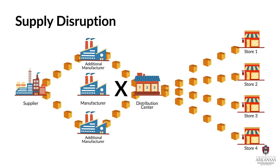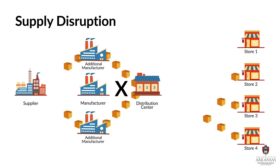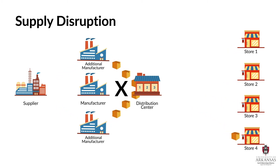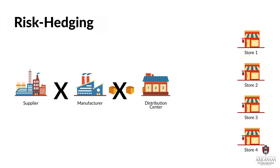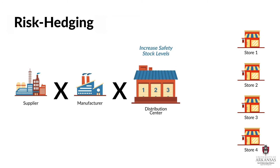Although having multiple sources of supply helps hedge risks, there may be some situations where the supply base is evolving and few options are available. In these situations, expanding the number of suppliers or manufacturers is not feasible. What can a supply chain manager do to prevent empty shelves further downstream? A risk hedging strategy also suggests that safety stock levels can be increased in various locations to create inventory buffers that help a supply chain function during short supply disruptions.